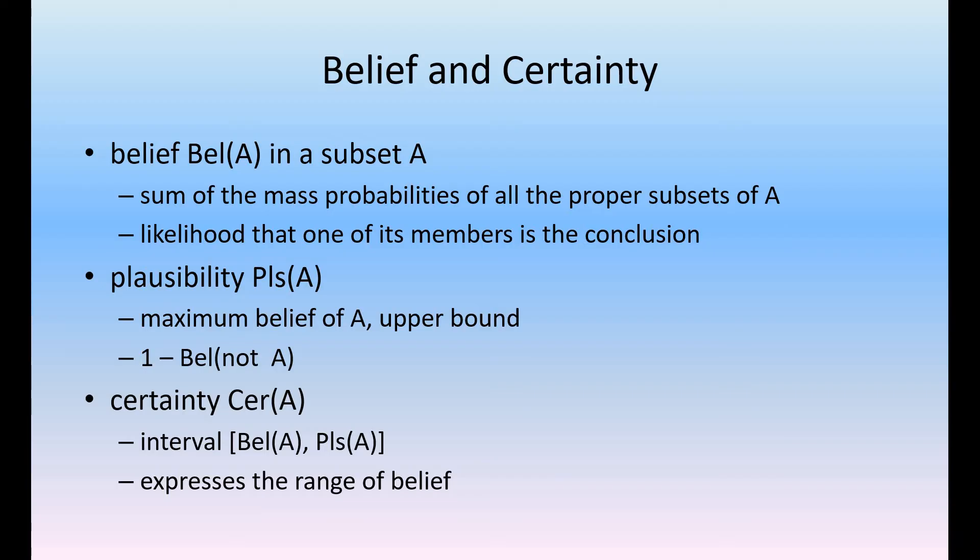Belief means the sum of mass probabilities of all the proper subsets of A, the likelihood that one of its members is the conclusion. Plausibility is equal to 1 minus negation B of A, and certainty can be defined as the interval in between the belief and the plausibility. It expresses the range of belief. These three are very important measures used in Dempster-Shafer theory.